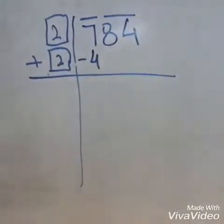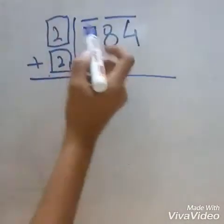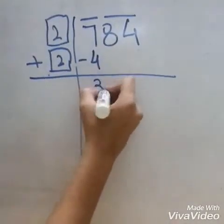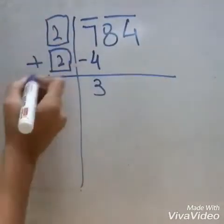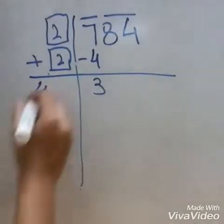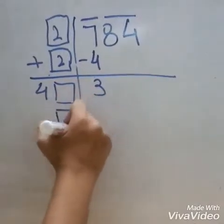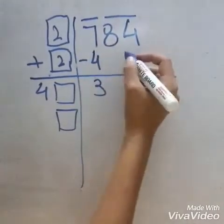Now we will bring down the other period. 7 minus 4 is equal to 3, and 2 plus 2 is equal to 4. We will write 4 here and then we will put two boxes over here.